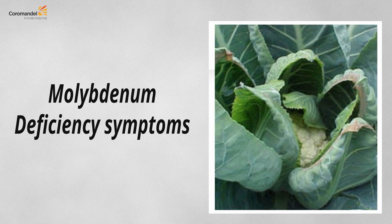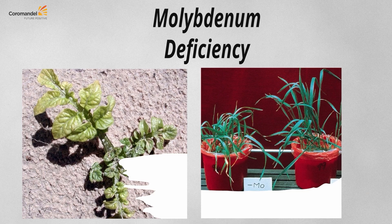Molybdenum plays a very important role in legume crops for nodule formation and for better utilization of nitrogen. Its deficiency affects nitrogen metabolism. In some species like cauliflower, leaves become reduced and develop a whiptail-like appearance — mainly due to molybdenum deficiency. Deficiency symptoms are shown for rice, cereal crops, and potato.